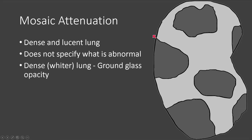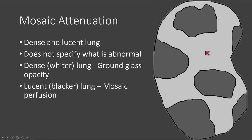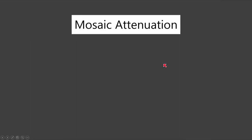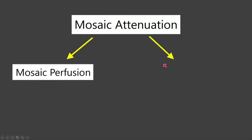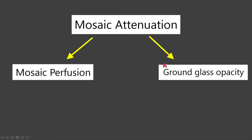If we think that the denser areas are abnormal, we would call that ground glass opacity. If we think that the more lucent areas of the lung are abnormal, we would call that mosaic perfusion. So under mosaic attenuation there are two broad categories: mosaic perfusion and ground glass opacity.